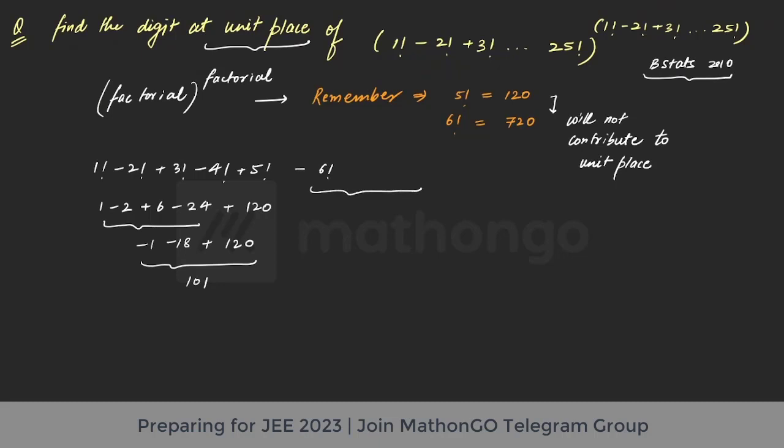So this will be 101. And then you will have again minus 6 factorial here, and so and so forth. But do not get confused because at the end, there will be plus 25 factorial, which will be making the entire term positive.